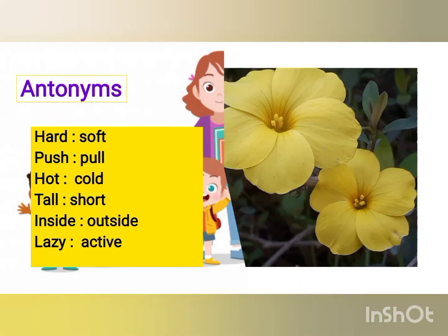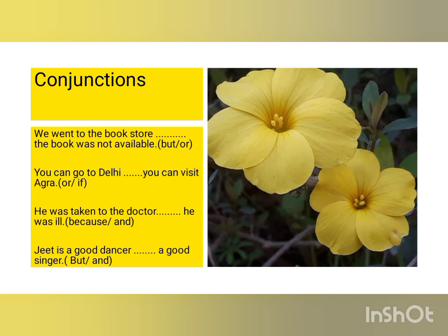The next topic is conjunctions. Conjunctions are joining words which join two sentences together. For example: 'We went to the bookstore, but the book was not available.' Another example: 'You can go to Delhi, or you can visit Agra.' Another: 'He was taken to the doctor, because he was ill.' And: 'Jeet is a good dancer and a good singer.'